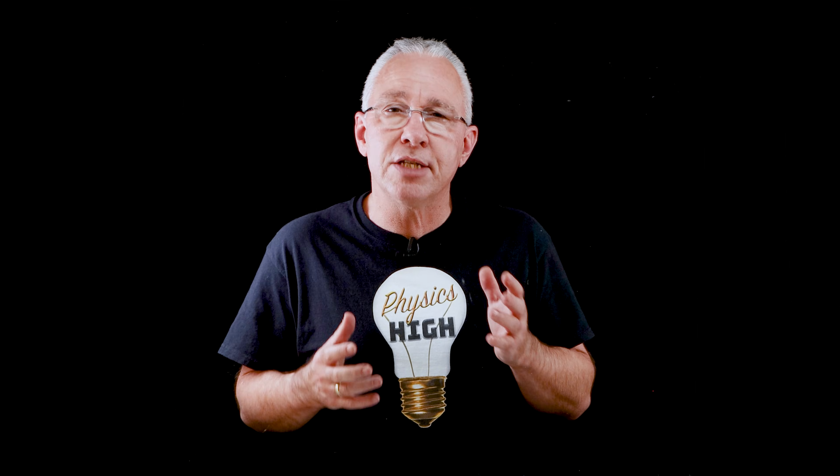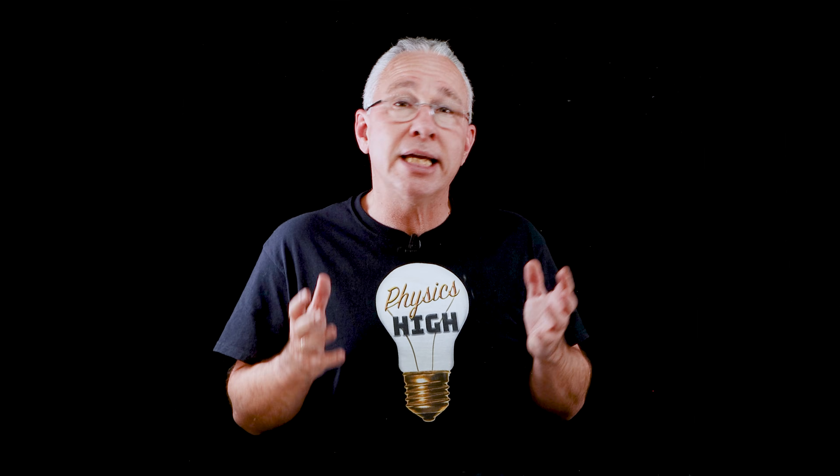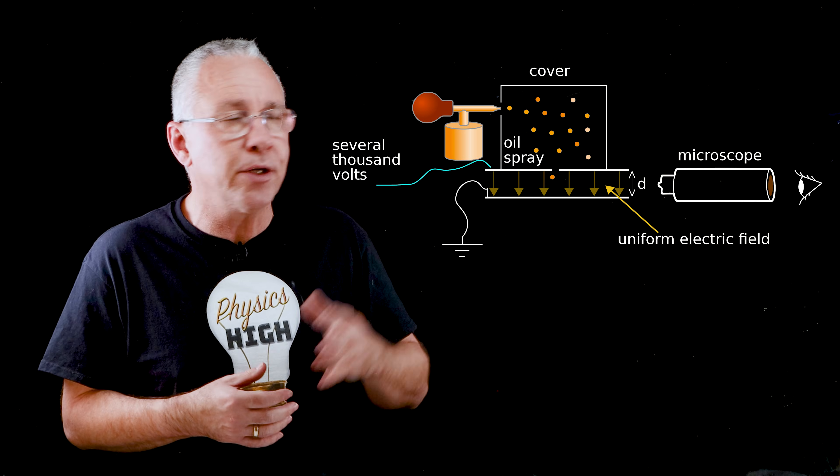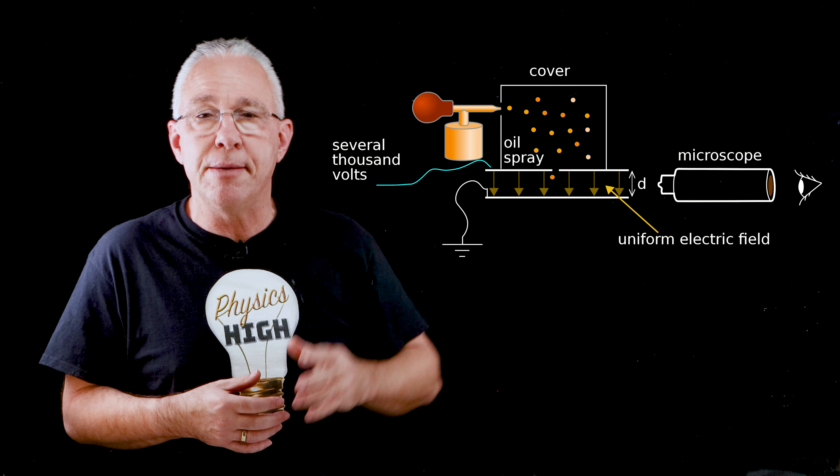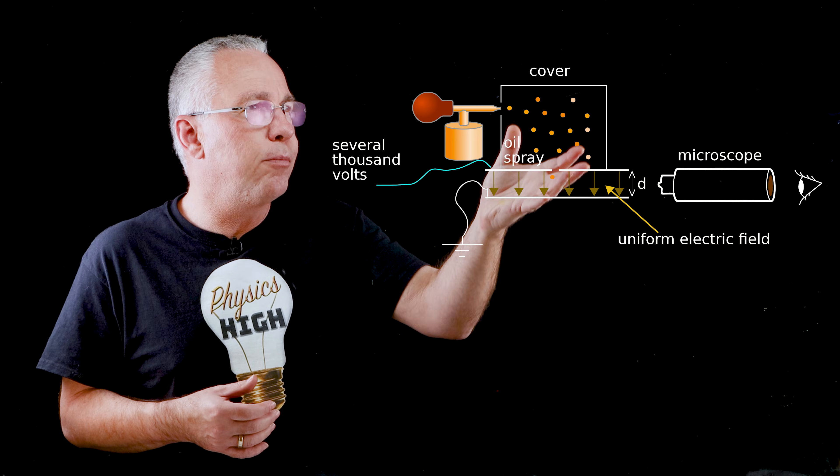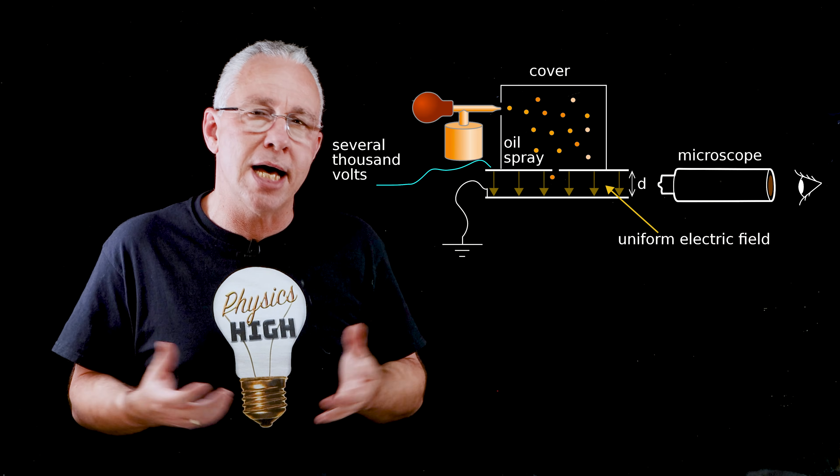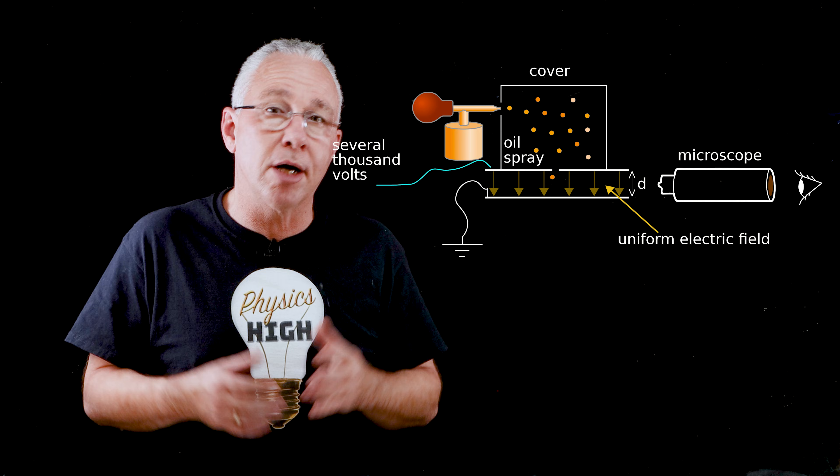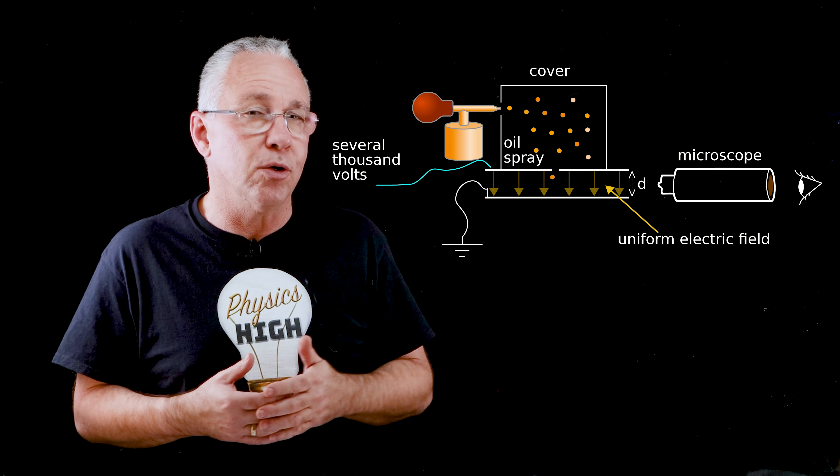In this short video I'm going to summarize Robert Millikan's work by using a simplified model so that you can understand the basic concepts. He set up a chamber with a mist of oil that he inserts into this chamber that he charges using x-rays. Those oil droplets fall between these two plates which are charged so therefore have an electric field across them and he uses a microscope to examine those tiny oil droplets.